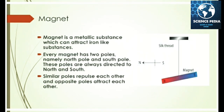Now about magnets: a magnet is a metallic substance which can attract iron-like substances. Every magnet has two poles named north and south. These poles are always directed to the north and south. Similar poles repel each other and opposite poles attract each other.